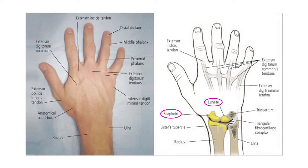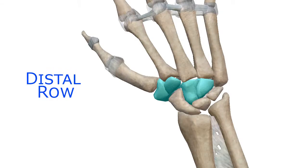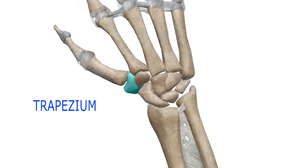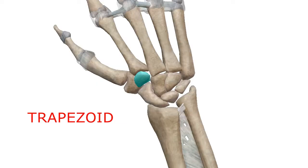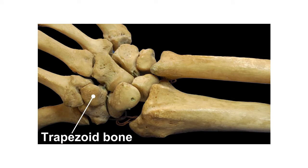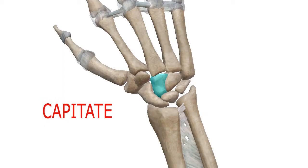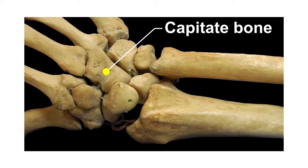Only the scaphoid and lunate bones articulate with the radius to form the wrist joint. Coming to the distal row of carpal bones, the first lateral-most bone is the trapezium, which is the Latin name for little table. The next bone is the wedge-shaped trapezoid, the smallest distal carpal bone, followed by the capitate — Latin for head-shaped — which is the largest carpal bone.